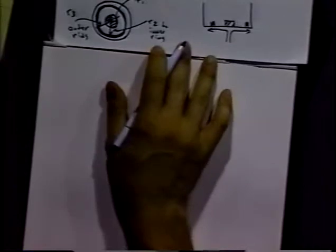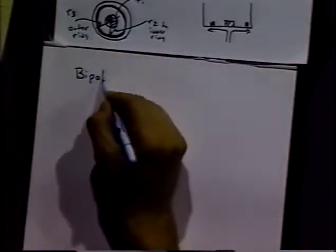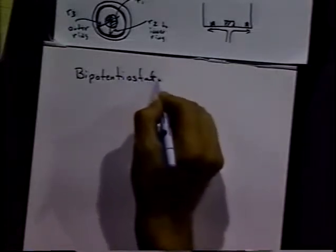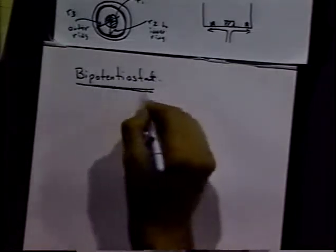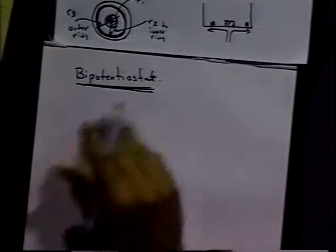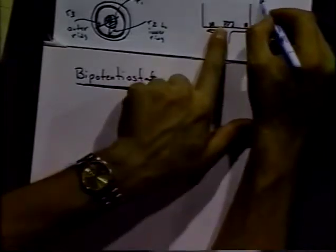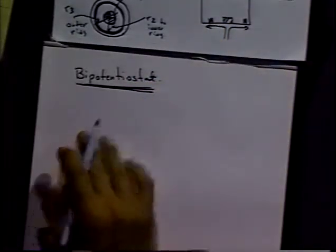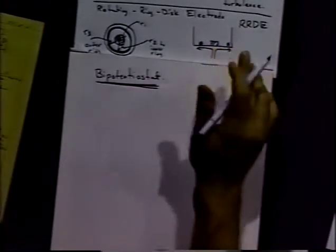First of all, let me tell you something about the equipment you need with the rotating disc electrode. We need a bipotentiostat. It's not absolutely necessary, but to use the rotating ring disc electrode, also often called the RRDE, we need a bipotentiostat.